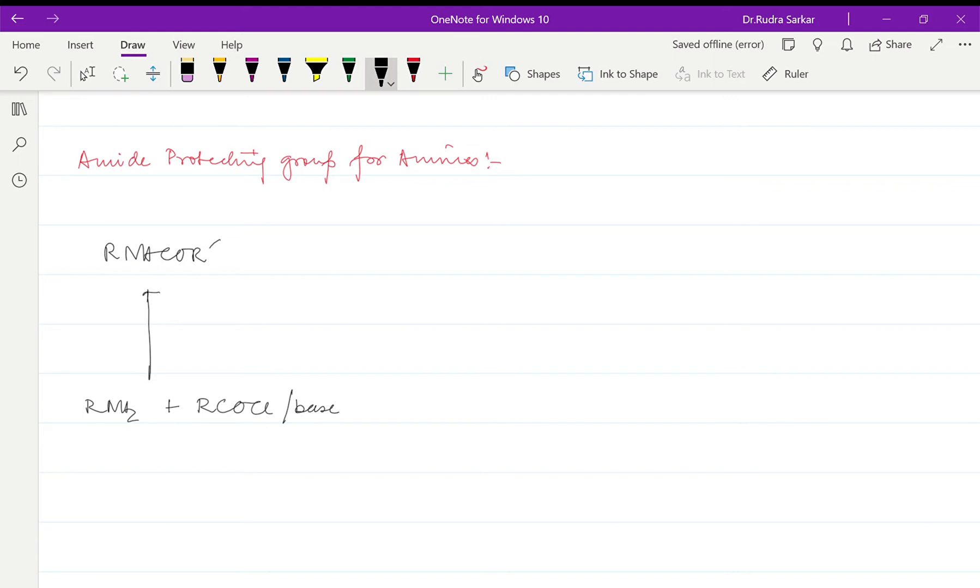The commonly used acyl groups for generating the amides are COCH3, also called Ac or acetyl, and benzoyl, which is COPh, also called Bz.